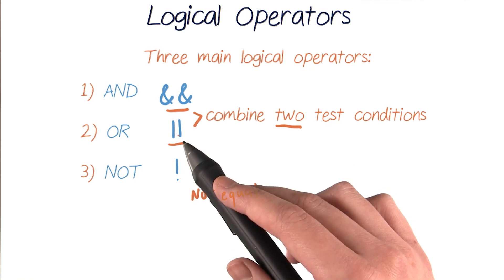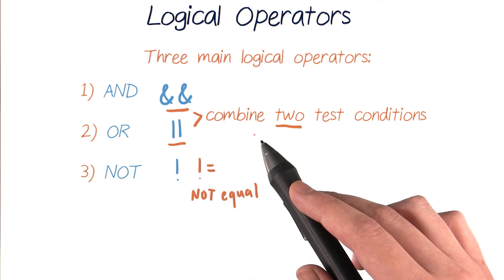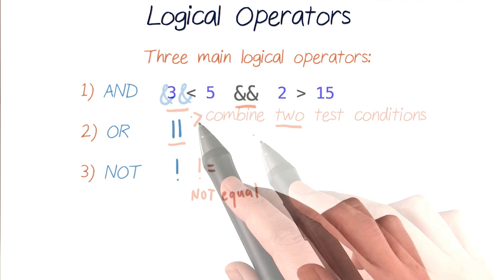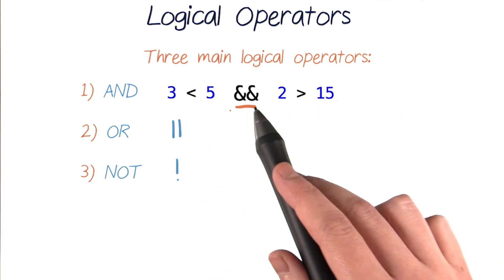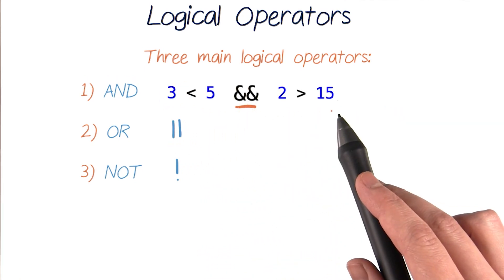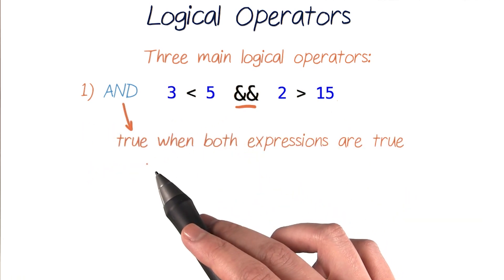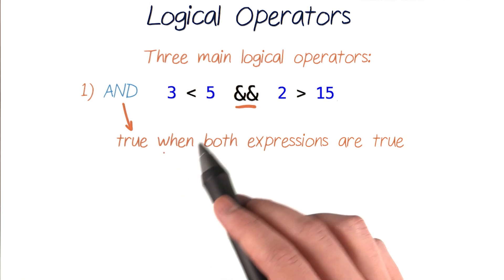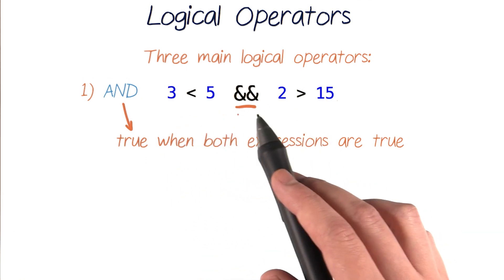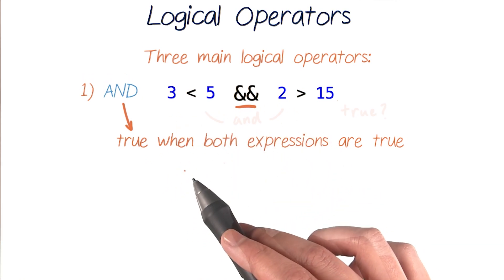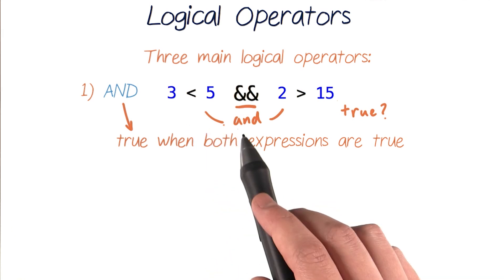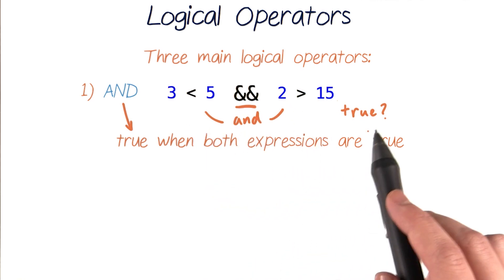Both AND and OR operators combine two test conditions or Boolean expressions at a time into one larger expression. Like, is 3 < 5 and is 2 > 15? AND combinations like this one are only true when both tests it combines, so the expressions to the left and to the right of the AND symbol are also true. In other words, it checks if the left and the right expressions are both true.